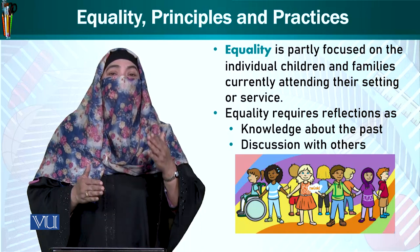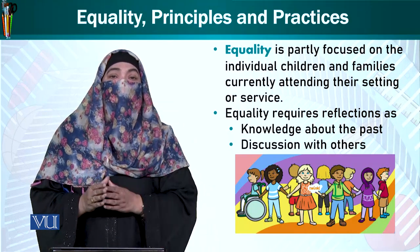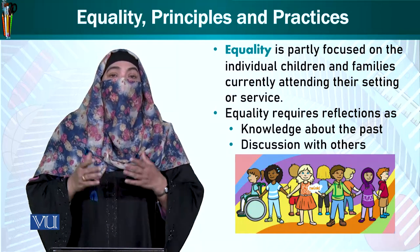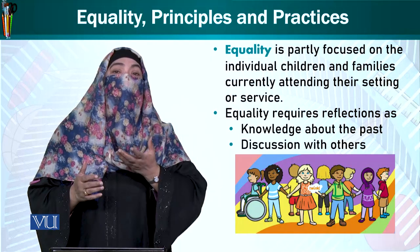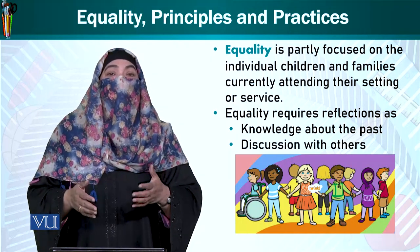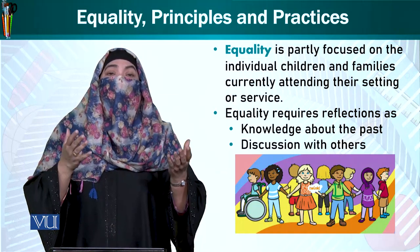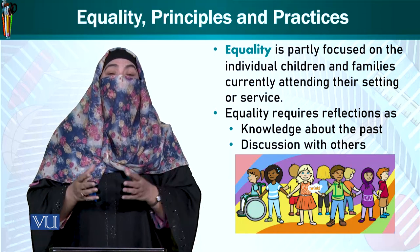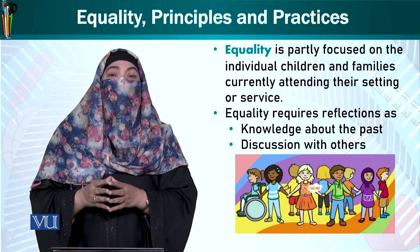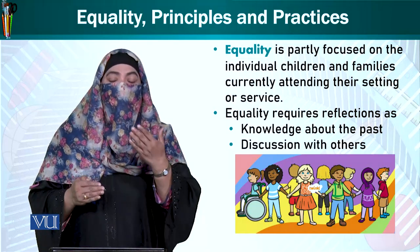ख्वा वो मुख्तलिफ gender के हो, ख्वा वो मुख्तलिफ socio-economic background के हो, ख्वा उनके physical abilities में difference हो, और ख्वा उनके educational background में फर्क हो — जैसे parents कुछ labor में होते हैं, कुछ offices में काम करते हैं, कोई पड़े लिखे हैं, कोई नहीं — हमारे मुल्क में ऐसा बहुत है। तो उन सारे तरह के बच्चों को एक जैसे وسائل फراहम करने हैं اور ایک سطح پر رکھنا ہے۔ (Whether of different gender, socio-economic background, different physical abilities, or different educational backgrounds — we have to provide equal resources and keep all such children at the same level.)